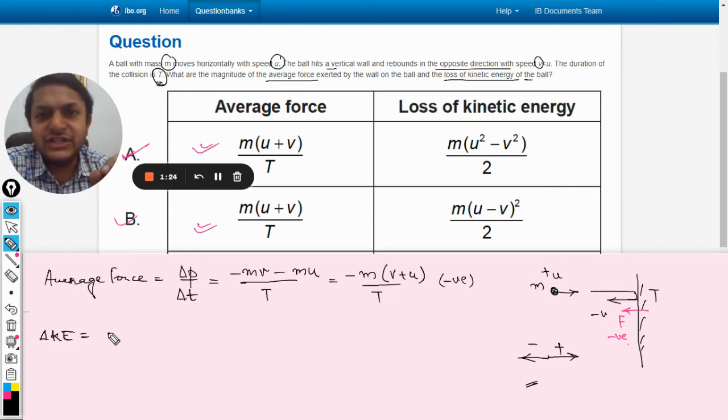Now kinetic energy is a scalar quantity, so we need not worry about the vector notations, the sign convention. We won't consider that. Why? Because kinetic energy is a scalar quantity.